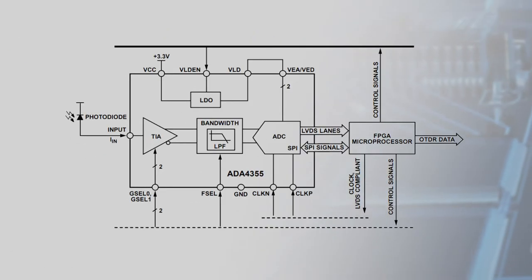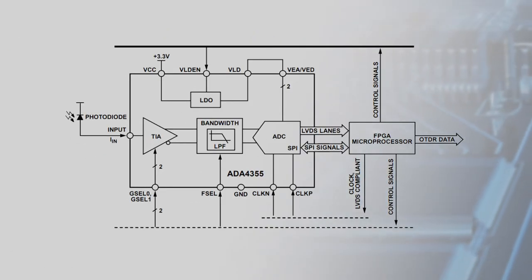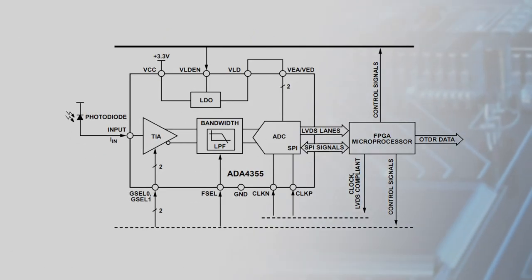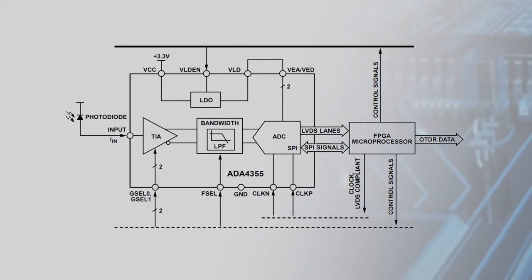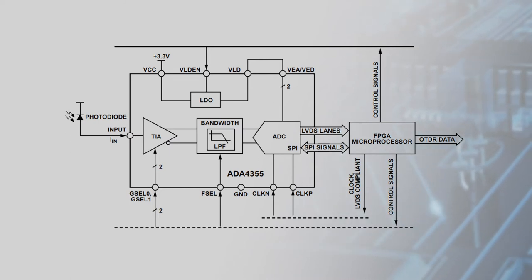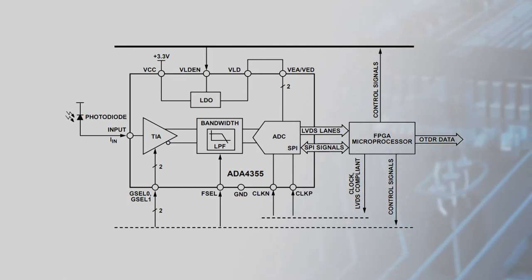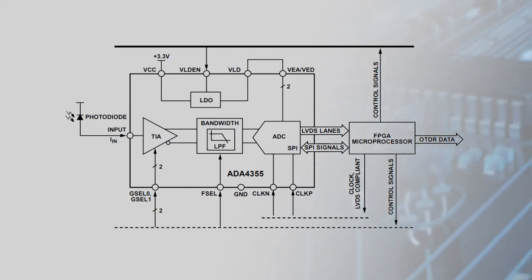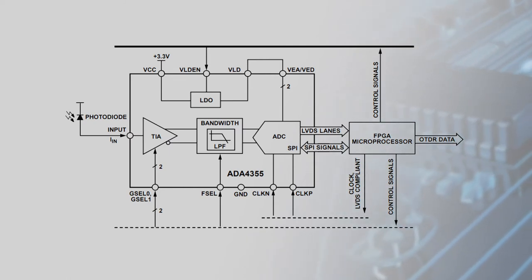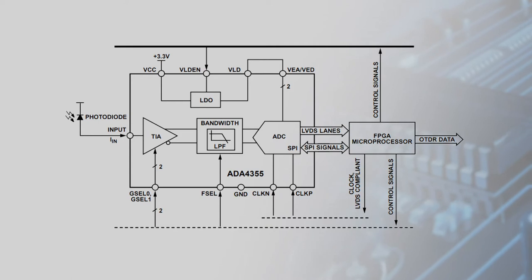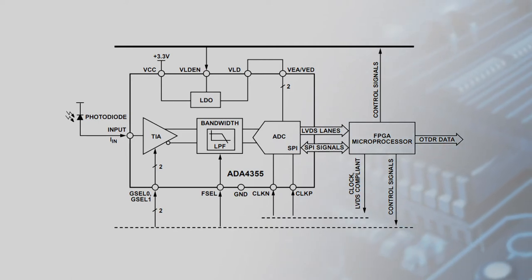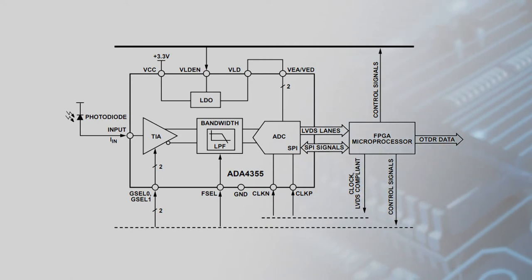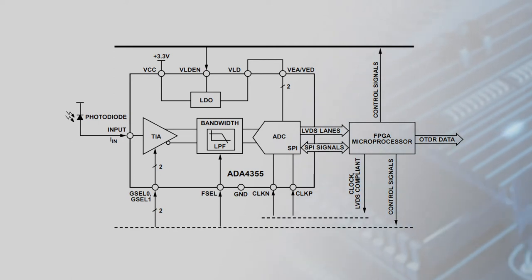In terms of performance, this configuration allows the ADA4355 to measure input currents from picoamps to microamps, with a full-scale input current range of 800 microamps and fast recovery from input overloading.